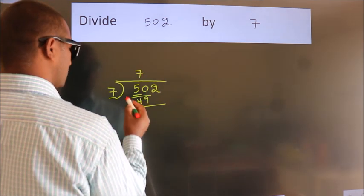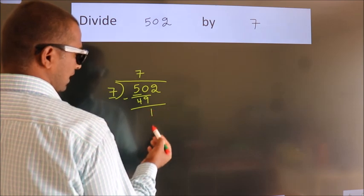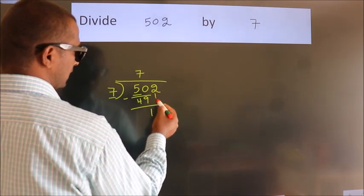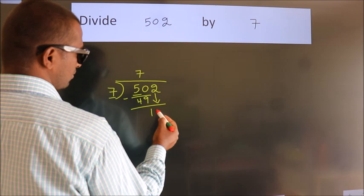Now we should subtract. We get 1. After this, bring down the beside number. So, 2 down.